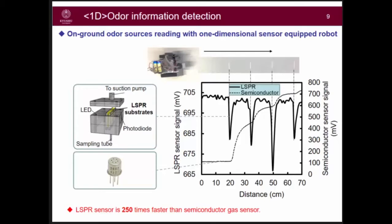Here is a simple comparison between the LSPR sensor and the semiconductor gas sensor. Using a gas source, the LSPR sensor shows the exact position of the gas source, while the semiconductor gas sensor just keeps rising with no recovery. The LSPR sensor is 150 times faster than the semiconductor gas sensor.